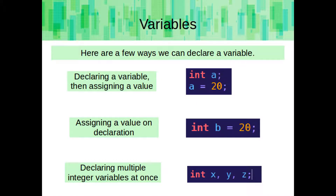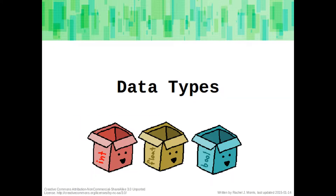Here are a few ways we can declare a variable. We could just declare a variable and then assign a value to it later, we could assign a value when we declare it, or we can declare multiple variables at once. Each variable has a data type that is specified when you declare the variable. The variable can never change its data type.